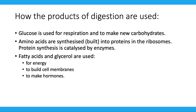Now to finish off, let's look at how the products of digestion are actually used. Glucose is used for respiration and to make new carbohydrates. Our body needs carbohydrates, fats, proteins, and vitamins to stay healthy. Amino acids are synthesized and built into proteins in the ribosomes — protein synthesis is catalyzed by enzymes. Fatty acids and glycerol are used for energy, to build cell membranes, and to make hormones. So we need glucose, amino acids, and fatty acids.